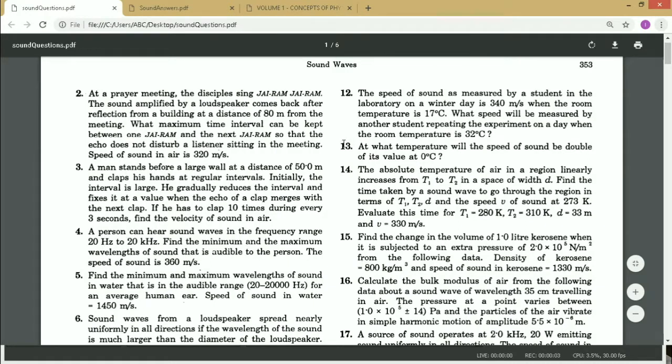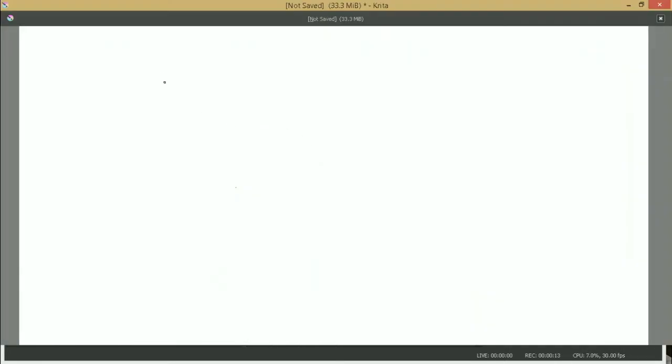Okay, so we will see question number 13. It says at what temperature will the speed of sound be double of its value at 0 degree centigrade? So what it is saying is we have the velocity at 0 degrees is V₀, and we have to find the temperature at which the velocity becomes 2V₀.